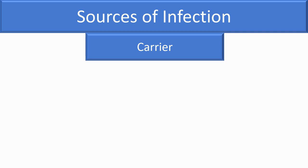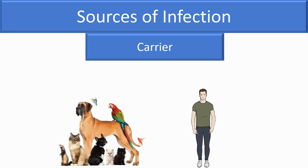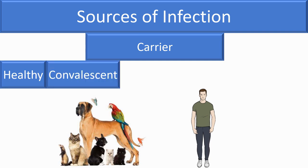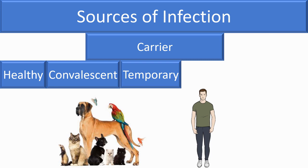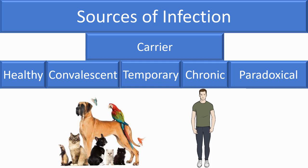A carrier is a person or animal infected with a parasite without any clinical or subclinical disease manifestation, who can transmit the parasite to others. Common carriers include dogs, cats, birds, reptiles, and humans. Types of carriers include: healthy carriers who never had disease manifestation; convalescent carriers who are recovering from disease; temporary carriers who remain carriers for less than six months; chronic carriers who carry the infection for more than six months; and paradoxical carriers who acquire infection from a carrier and themselves become carriers.